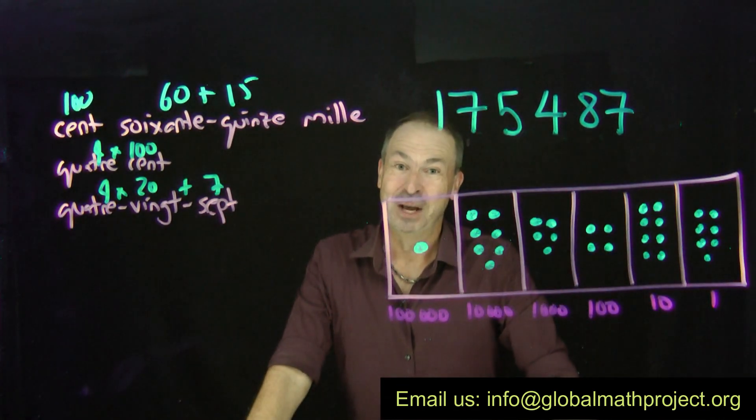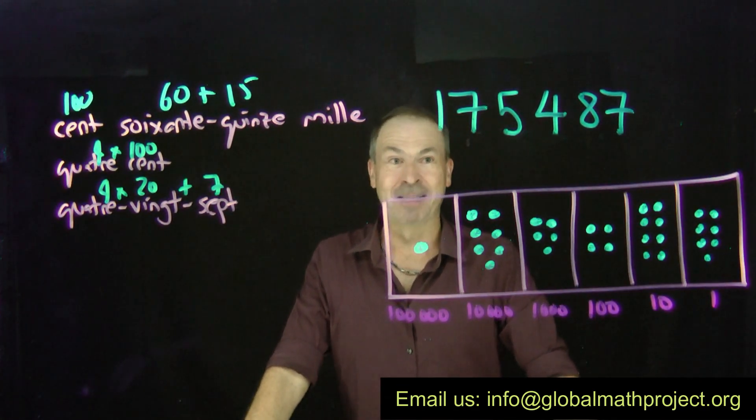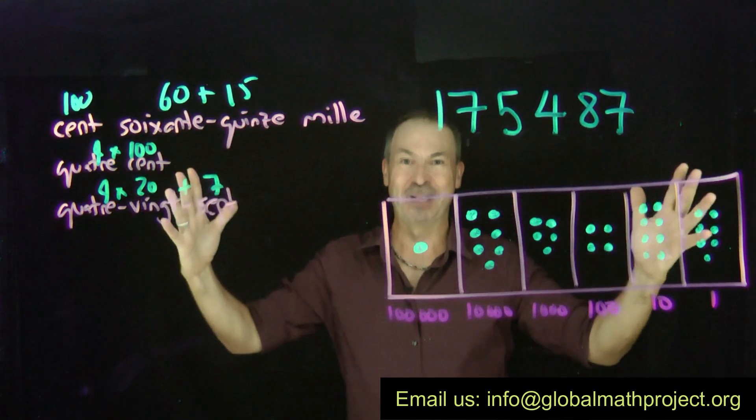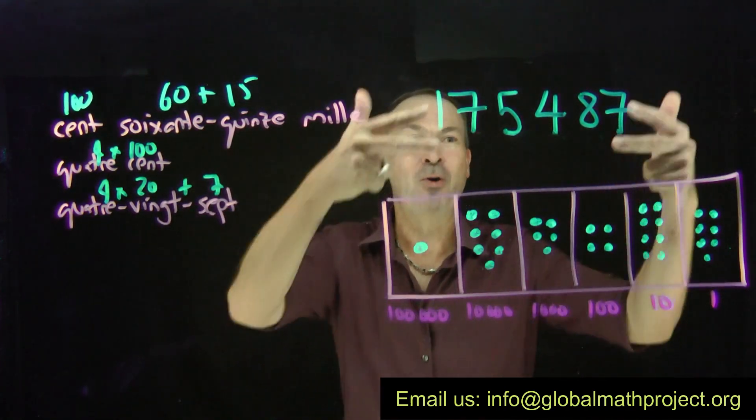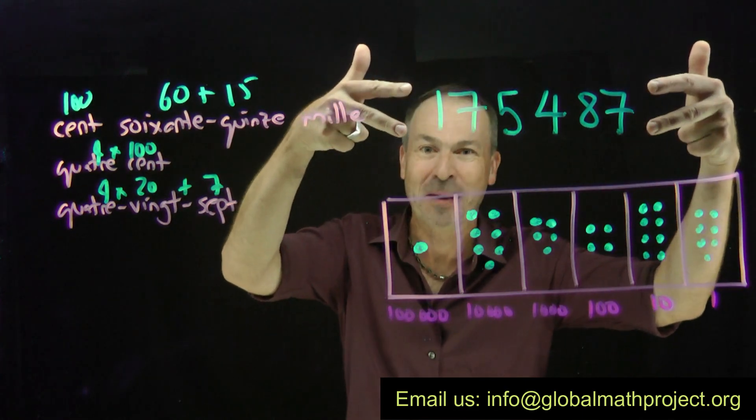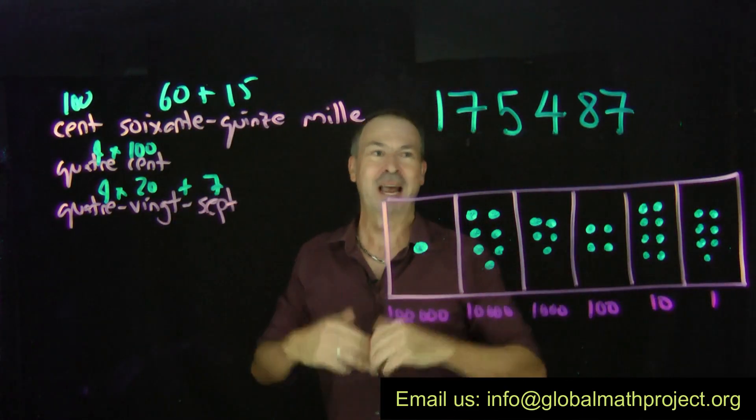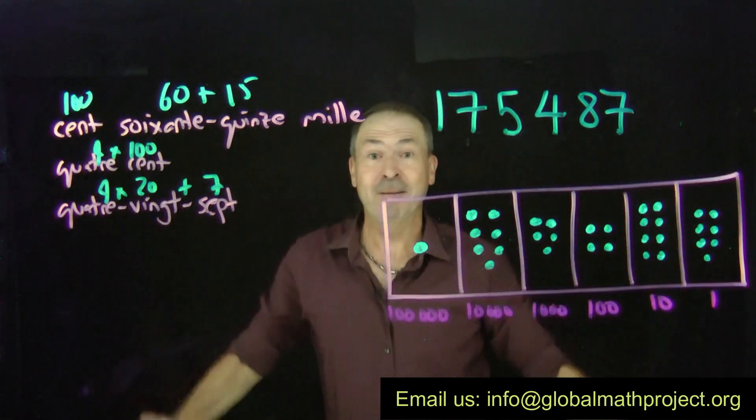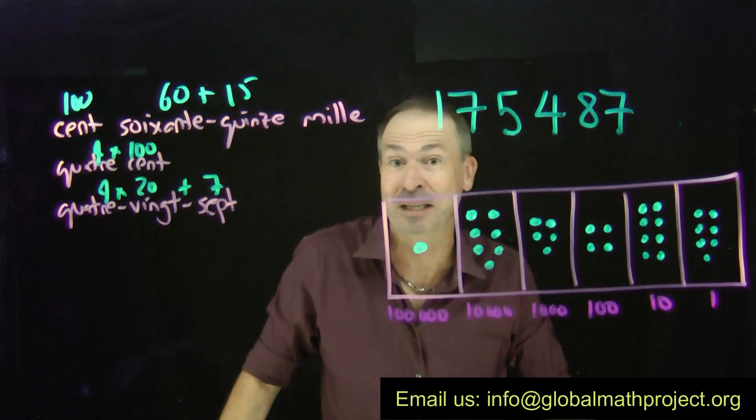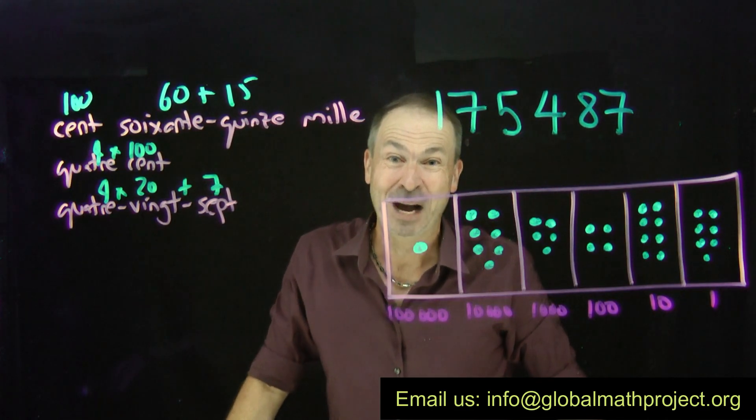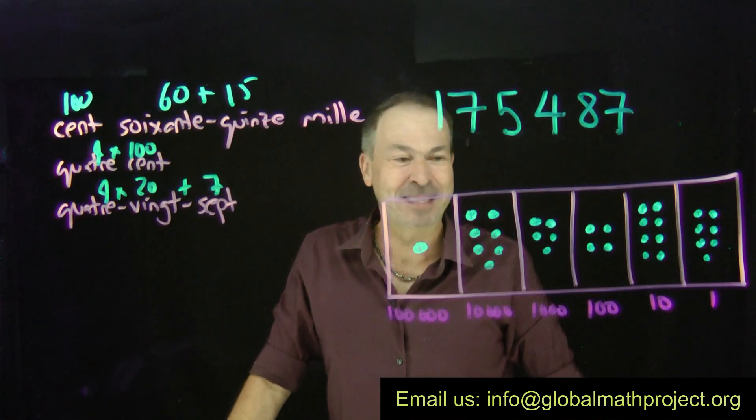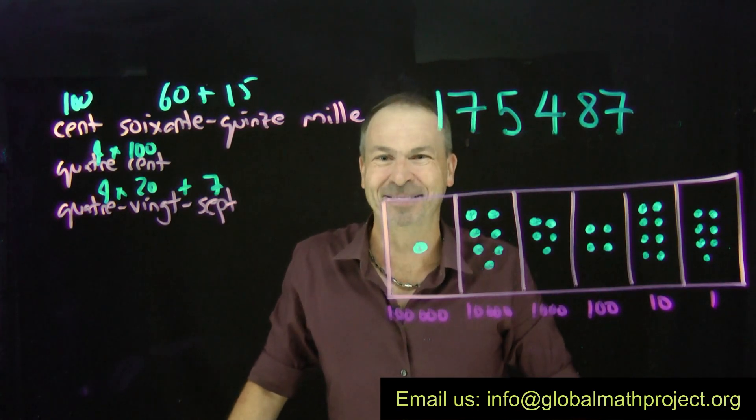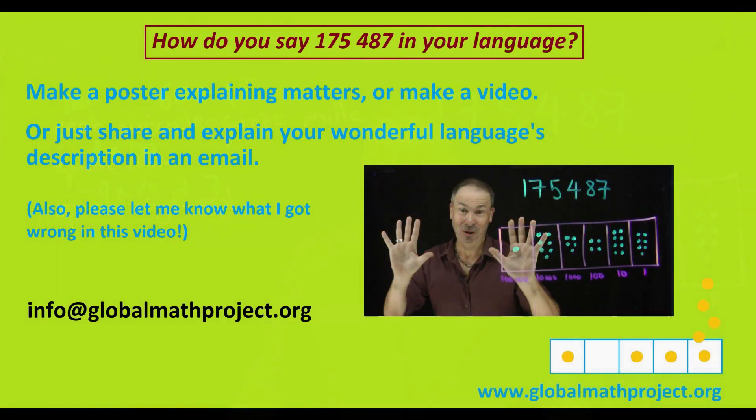Fascinating stuff. We are all a beautiful humanity together. We think about mathematics in fascinating ways. Let's learn from each other. Make us a poster showing how you say this number in your language and explain the wonderful notation and thinking you use. Or maybe send us an email describing it. Or maybe make a video explaining how to actually use this number in your wonderful language. Well, let's learn from each other and let's explore this fascination of numbers, which is just truly global and beautiful beyond belief. Thank you.